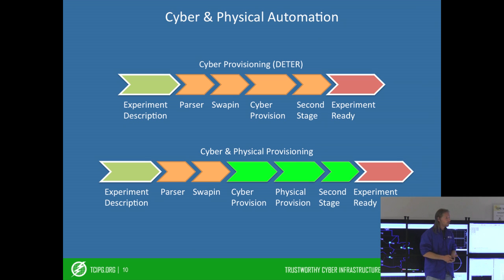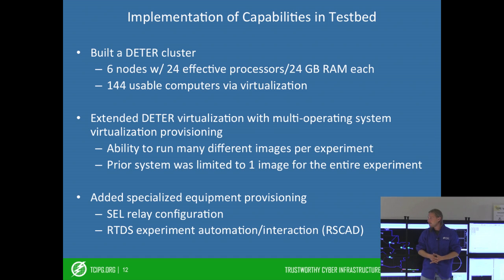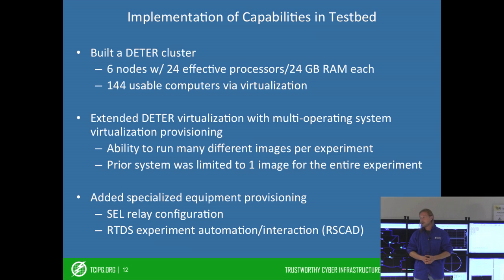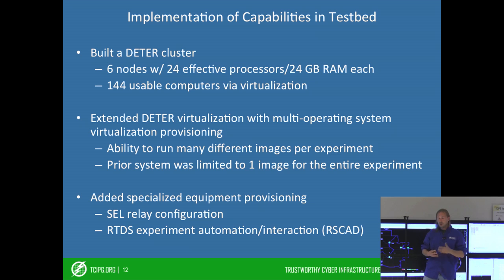We've built a DETER cluster. Our DETER cluster is in the back of the room and has six nodes. Each node has 24 effective processors with 24 gigs of RAM, which using the built-in virtualization gives us 144 usable computers. We've extended that virtualization system to add multiple operating systems — originally the system was limited to a single virtual machine image for the entire experiment, but we've added the capability to use multiple images for an experiment.